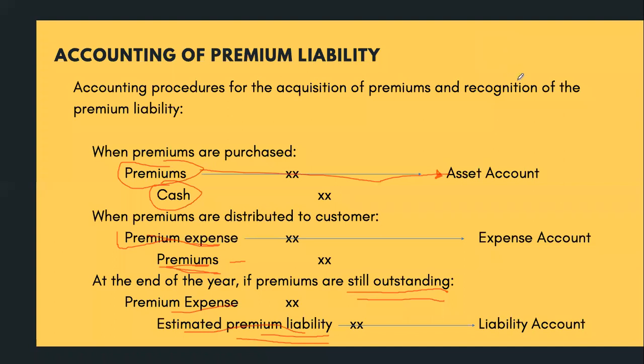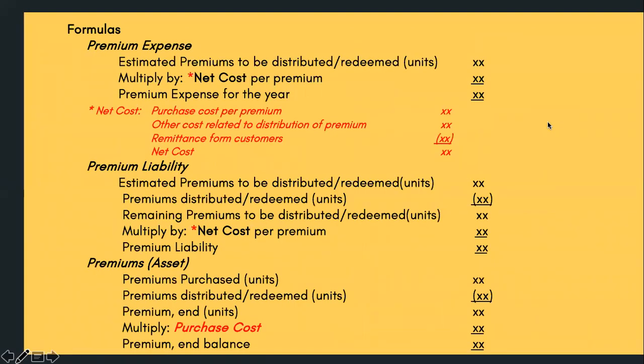Aside from journal entries, let me give you formulas, because in problems the typical questions are: how much is the liability for this year, how much is the expense for this year, and how much is the remaining premium asset? These formulas allow you to answer faster, especially if journal entries are not required — though journal entries are still important.